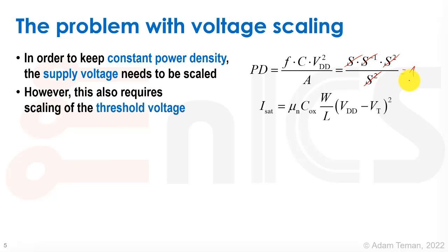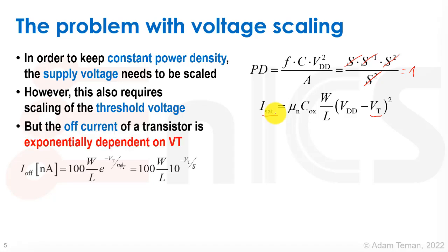Dennard scaling also requires scaling the threshold voltage VT. When we scale VDD, we must also scale VT, otherwise current drops. But as we keep scaling VT, the off-current of a transistor rises exponentially with VT reduction. This exponential rise in off-current means the transistor loses its ability to switch with a high Ion-to-Ioff ratio, and we end up with massive leakage that dominates power.